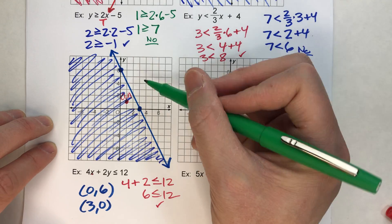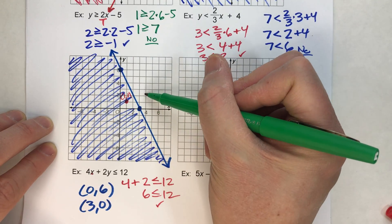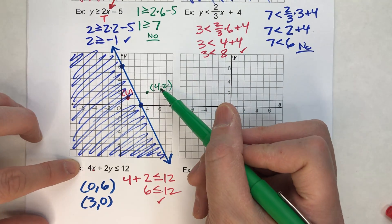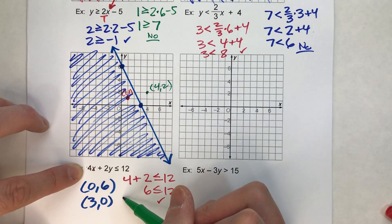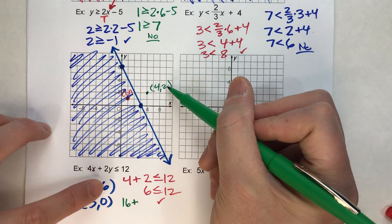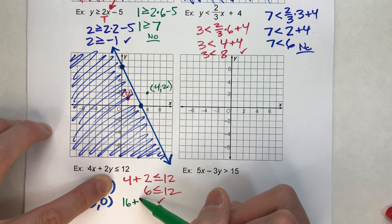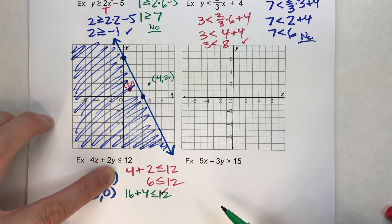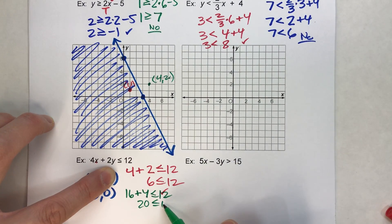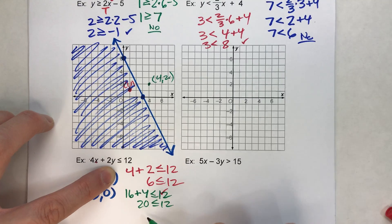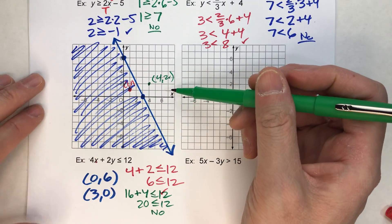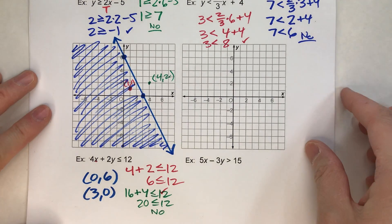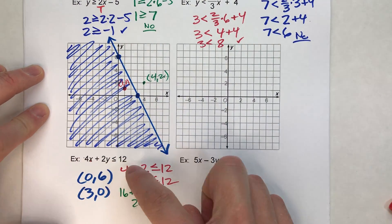It doesn't hurt to check one point on either side. Let's try the point 4, 2 just to make sure. X is 4, so 4 times 4 is 16. Plus y is 2, so 2 times 2 is 4. That has to be less than or equal to 12. Is it? 16 plus 4 is 20. Is 20 less than or equal to 12? No, that's definitely not. So we know that is not a solution — and notice, that's in my non-shaded side. You can see how it's a little more confusing when you've got it in standard form.